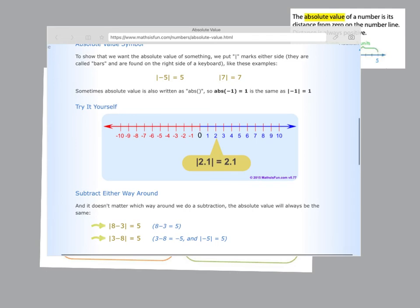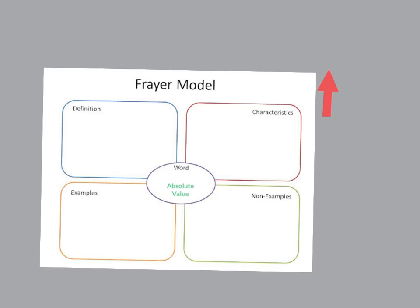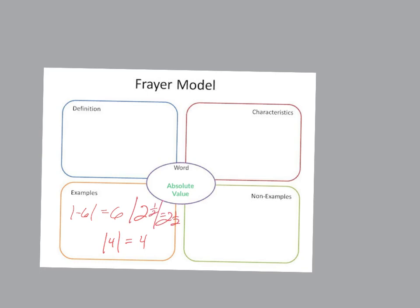When you're done becoming an expert on absolute value, we are going to do our Frayer model for the day. The definition is going to be: the distance to 0. Characteristics: the answer will always be positive. It could be integers, it could be rational numbers — which would be decimals, fractions — and it can be 0, but the answer will always be positive. For examples, the absolute value of negative 6 equals 6, and the absolute value of 4 is 4. Maybe also a fraction like the absolute value of 2 and 1 half is 2 and 1 half. For non-examples: the absolute value of negative 6 equals negative 6 — definitely not true. And the absolute value of 4 with a negative answer — we know we can't do that.